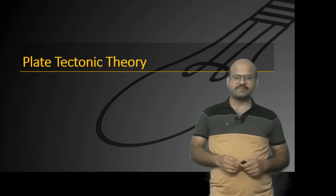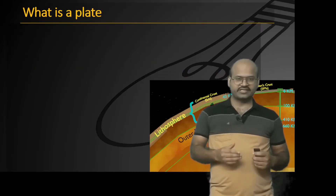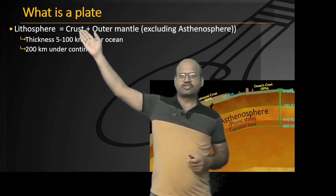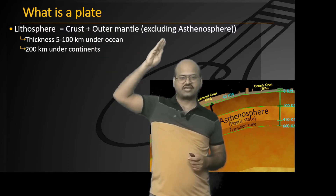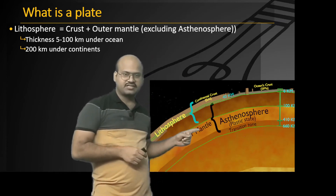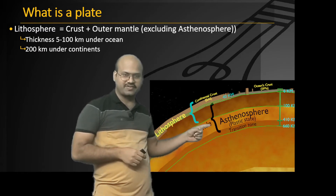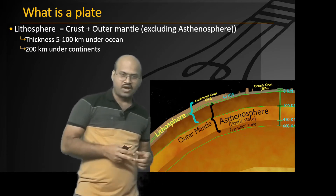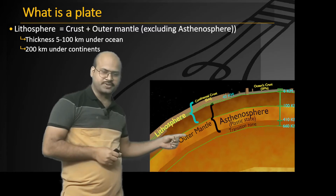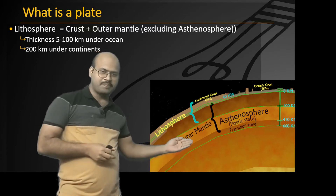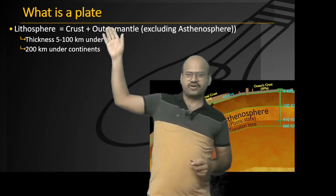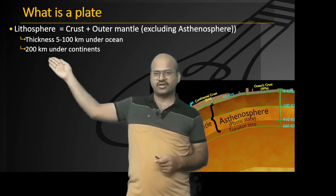Now let's understand what exactly plate tectonic theory is. First, let's understand what a plate is. The lithosphere is basically the crust plus the outer mantle, excluding the asthenosphere. Looking at a diagram of the interior of the earth, the outer mantle includes both the brittle part and the asthenosphere, which is in a plastic state. The lithosphere includes the crust as well as the brittle part of the outer mantle, excluding the asthenosphere. Lithosphere thickness varies — it is around 5 to 100 kilometers under the ocean and can go up to 200 kilometers under continents.